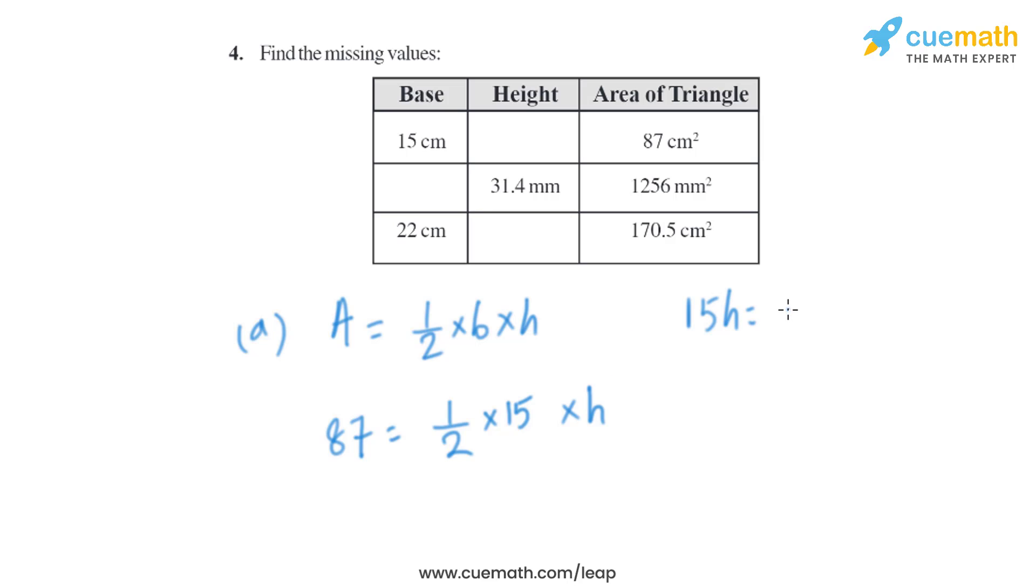That will equal to 87 times 2, which is same as 174. So from here we will get the value of H. H will be 174 divided by 15, which is same as 11.6. So it will be 11.6 centimeter. So that will be the height of the A part.